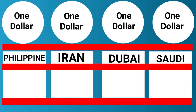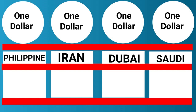And 1 US dollar is equal to 42,000 Iranian riyals. 1 US dollar is equal to 3.70 United Arab Emirati dirhams.